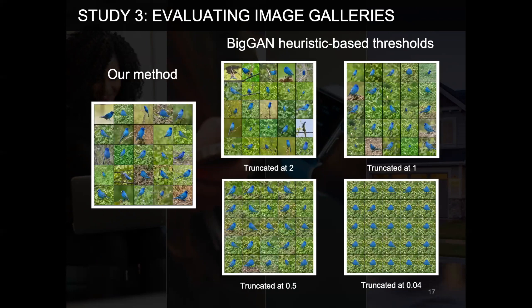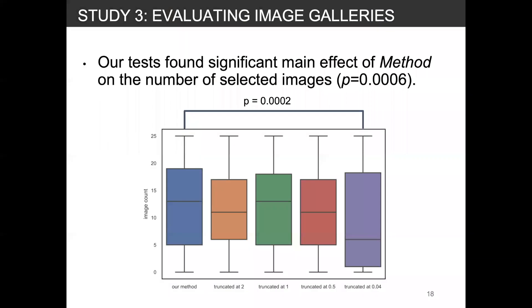Using visual examination, we found that our method sampled more diverse galleries of photorealistic images, which you can see on the left compared to baselines on the right. We ran the AlignedRank transform to analyze the data and performed a pairwise contrast test. Our test found a significant main effect of methods on the number of selected images, and our pairwise test found a difference between our method and at least one baseline. Not surprisingly, our test could not find a significant effect of category.